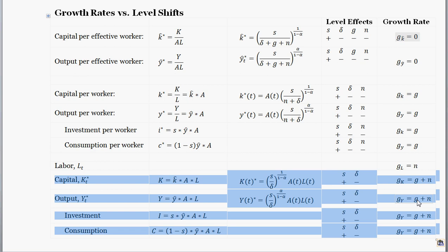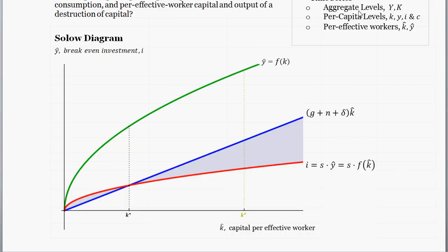Then some capital is destroyed. The effect of that is to take us from the steady state level of capital per effective worker and push it down to somewhere below K-star. At any level of capital per effective worker down here — which occurs with the destruction of capital — the investment line is greater than the breakeven investment line. So investment is greater than breakeven investment, which means capital per effective worker is accumulating.